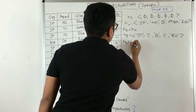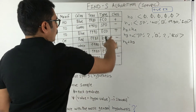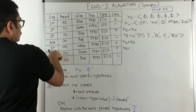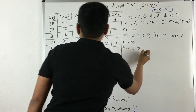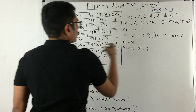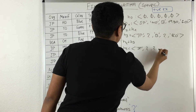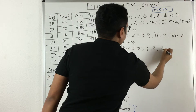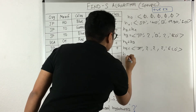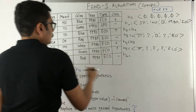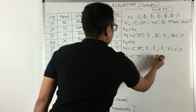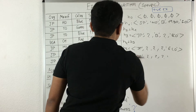The fourth example is negative, so h4 is ignored. For h5, the fifth positive example: origin is JP (same), manufacturer is Honda but h3 had question mark so it stays as question mark, color is white instead of blue so we replace with question mark, year is 1980 but already question mark so remains question mark, and type is Eco (same). For h6, the sixth positive example: JP, Toyota (was question mark, stays question mark), green, 1980, Eco.